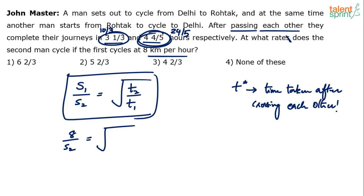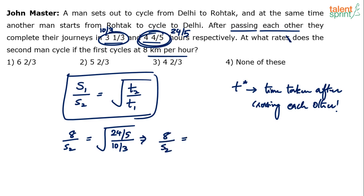Time taken by the second person is 24/5, and time taken by the first person is 10/3. So, 8 divided by S2 equals the square root of (24/5) divided by (10/3). Simplifying: 24 multiplied by 3 gives 72, over 50.